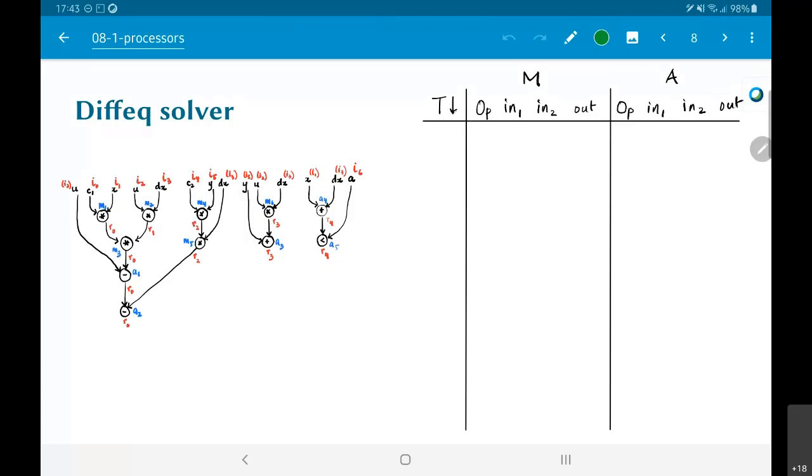And the right hand side of the slide essentially is trying to put down details of at each instant of time, what should be provided as inputs to the multiplier, what should be provided as inputs to the adder?